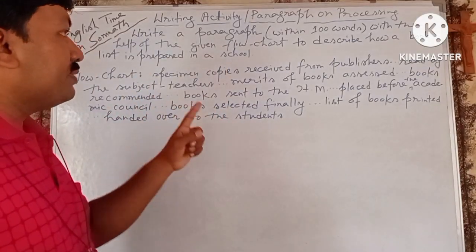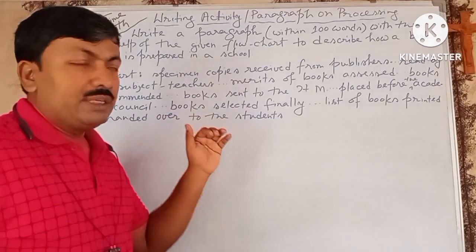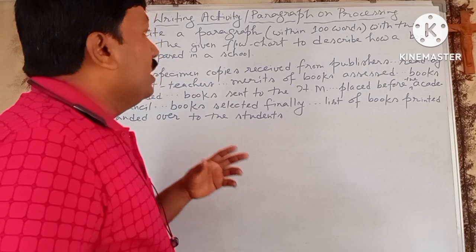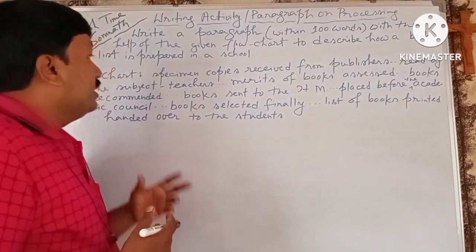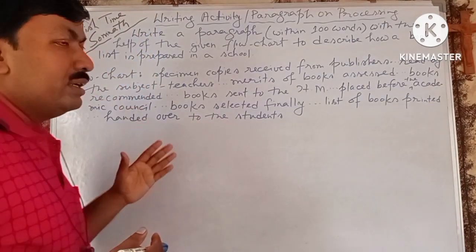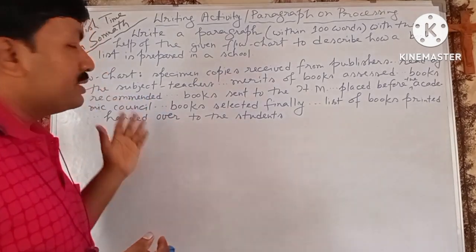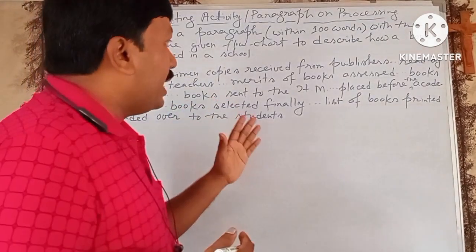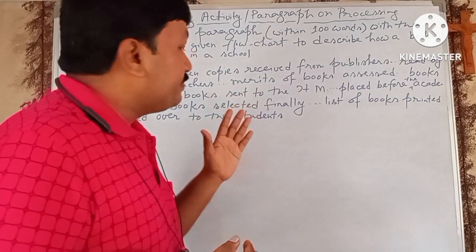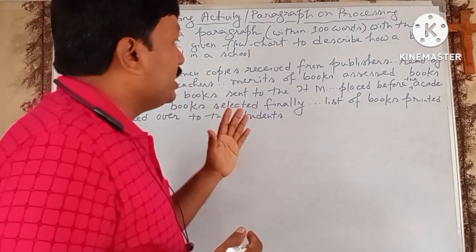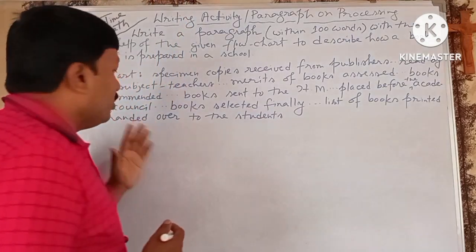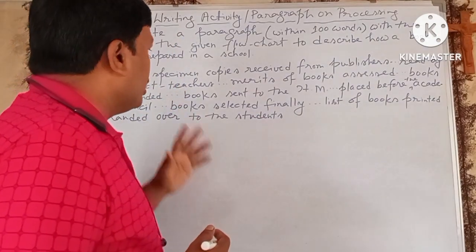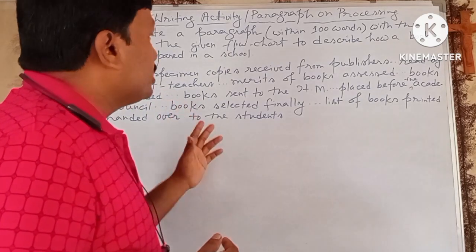The specimen copy is received from publishers. The specimen copy is read by the subject teachers. The merits of the books are assessed, and the books are recommended by the subject teachers. The book is then sent to the HM.